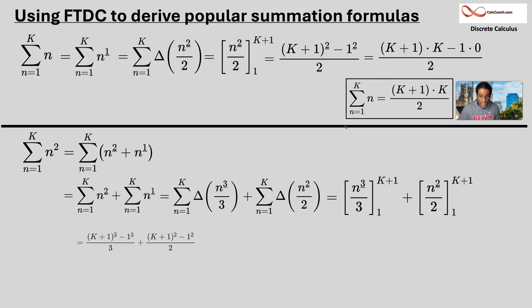And we replace the n with k plus one and then replace it with the one. We have k plus one falling three over three minus one falling three over three. K plus one falling two over two minus one falling two over two. And, but we know one falling two, one falling three, those guys are zeros.